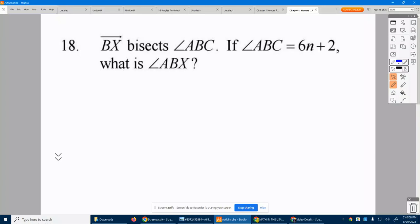Problem 18: Ray BX bisects angle ABC, so we have this angle with vertex B. What does it mean that ray BX bisects it? It means it cuts it in exactly half.